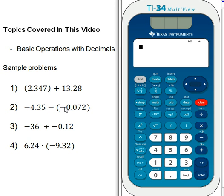Remember that with our calculator, if we want to put in a negative sign, we have to use the negative sign button at the bottom of our keypad. If we want to put in a subtraction operation, then we use the dark blue subtraction button. So we've got negative 4.35 and then minus and then negative 0.072. And then we hit enter to get our answer, and it tells us that the answer is negative 4.278.